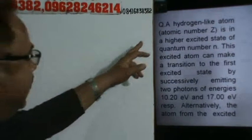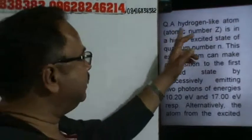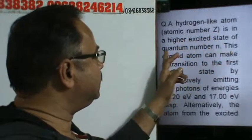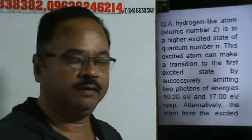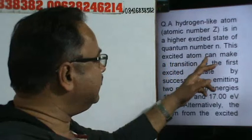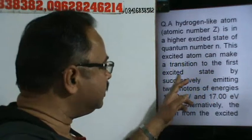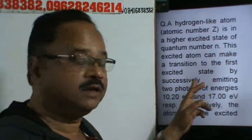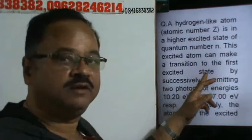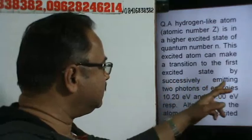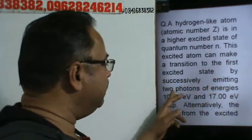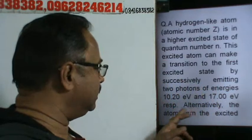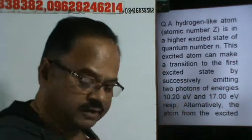Next problem. A hydrogen-like atom of atomic number Z is in a higher excited state of quantum number N. This excited atom can make a transition to the first excited state, that is N equal to 2, by successively emitting two photons of energy 10.2 electron volt and 17 electron volt respectively.